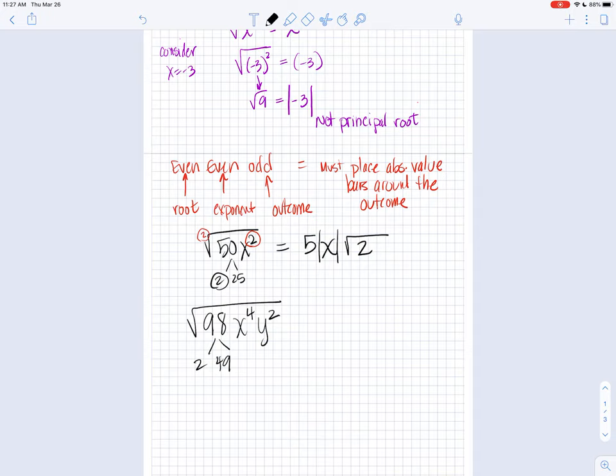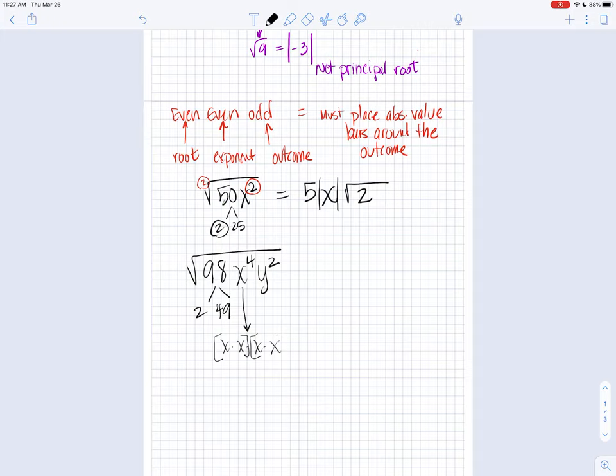So we're going to go step by step through this radicand. We're going to look for perfect squares within the number, and then within x to the 4th, and then within y squared. So x to the 4th, by the way, that's x times x times x times x. And so then if we were looking for the square root of that, x to the 4th is x squared times x squared. Okay, and then y squared is just y times y. All right, so let's simplify this expression.